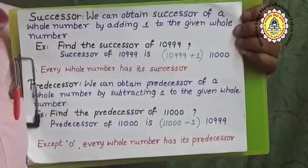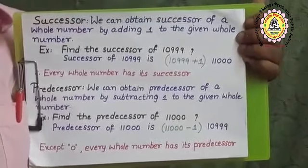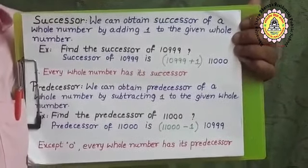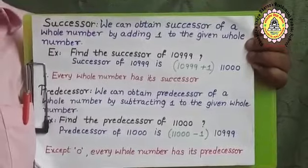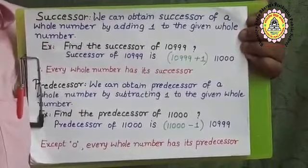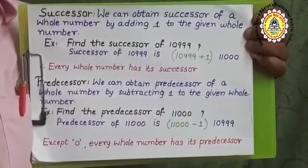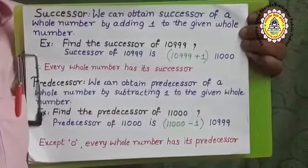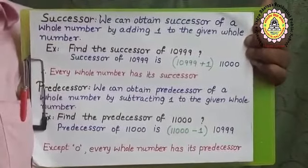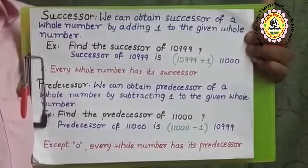In natural numbers, all natural numbers are whole numbers. But all whole numbers are not natural numbers. Because all natural numbers — 1, 2, 3, and so on — are present in the whole number set. But in the whole number set, 0 is there, while in natural numbers, 0 is not there. So all natural numbers are whole numbers, but all whole numbers are not natural numbers.